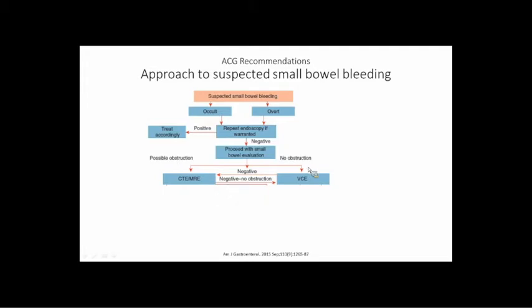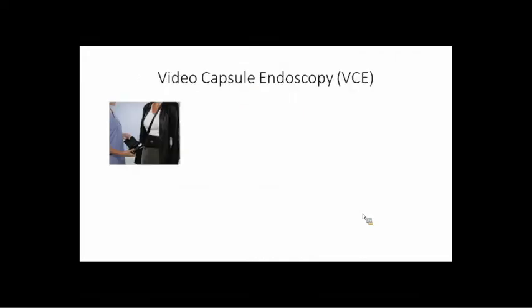Second-look endoscopy is a common first step in evaluating the small bowel — even though it's not the small bowel itself. If you find something, you treat it; if not, you move on to small bowel evaluation. Small bowel evaluation is done either with imaging or with capsule endoscopy. Most of the time we start with capsule endoscopy. The patient comes into the office, doesn't usually need a full prep — just a clear liquid diet the day before and an overnight fast. The nurse hooks them up with a sensor belt and a recorder.